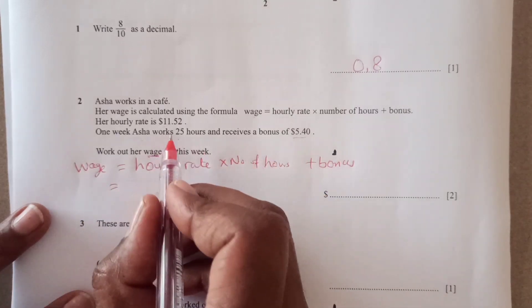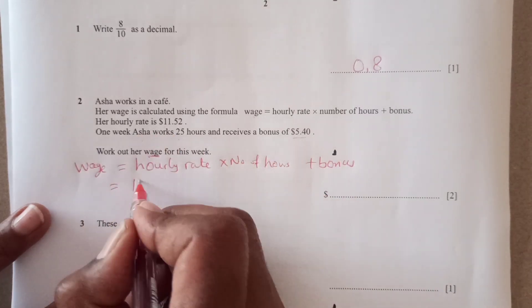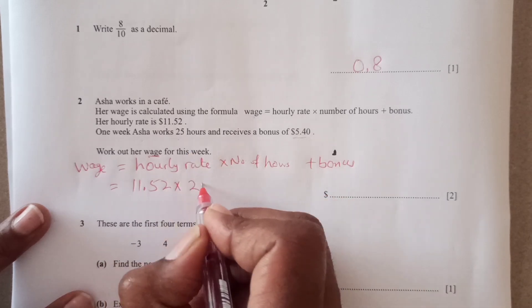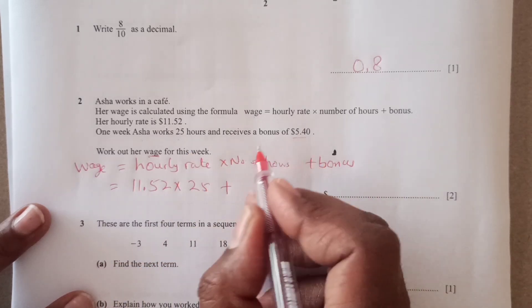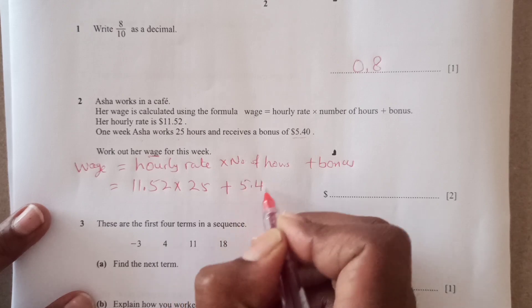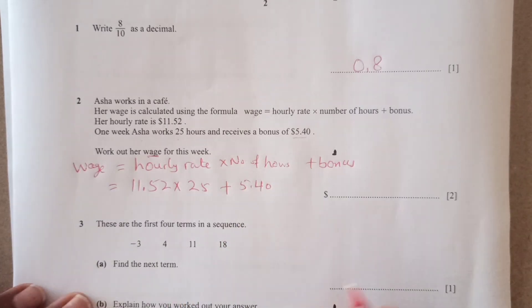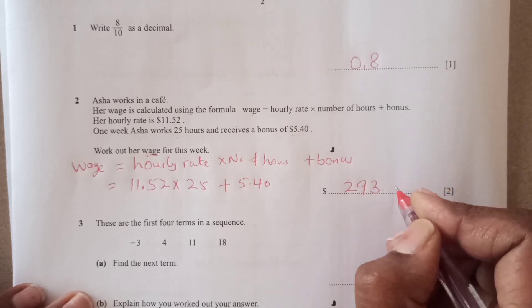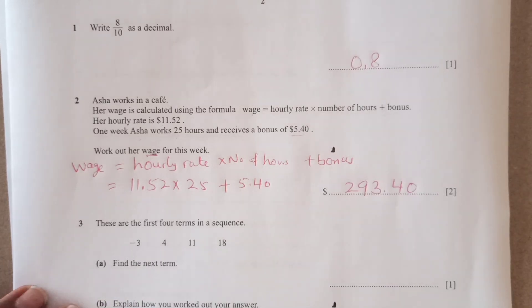So hourly rate is 11.52, number of hours she worked 25 hours plus bonus is 5.40. Just plug in all the values and you are going to get the answer 293.40, right.